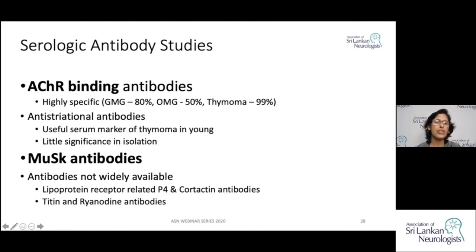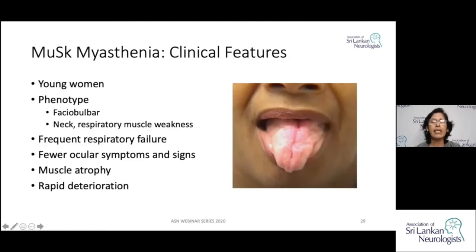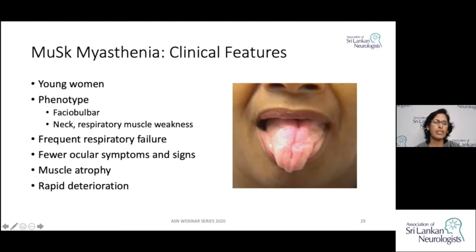In seronegative patients, check for MuSK antibodies. MuSK Myasthenia has atypical clinical features: patients are typically young women, more likely to have faciobulbar, neck, or respiratory muscle weakness, and can also have muscle wasting — which may be confused with motor neuron disease. They have fewer ocular symptoms, rapid deterioration, and frequent respiratory failure.